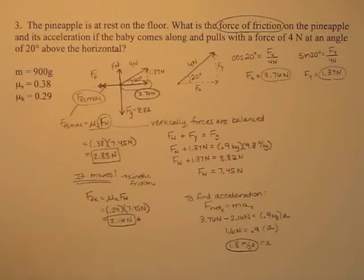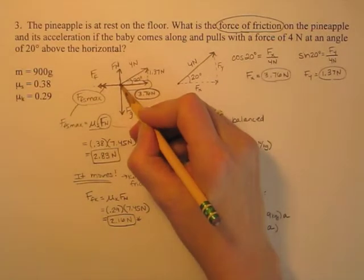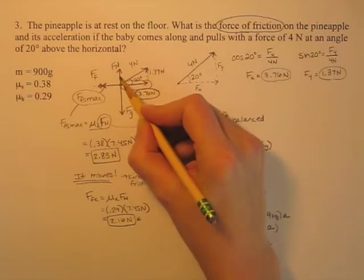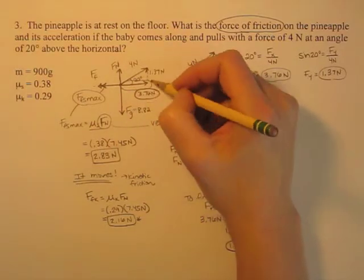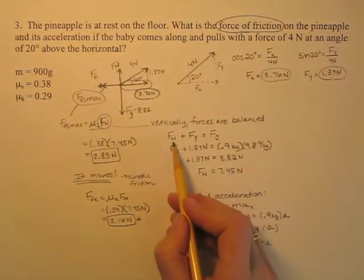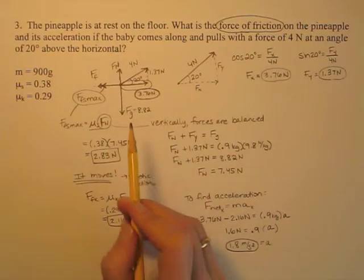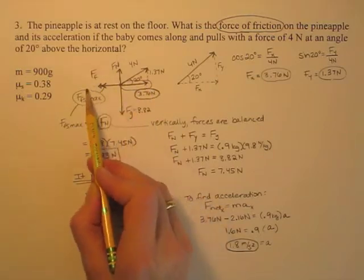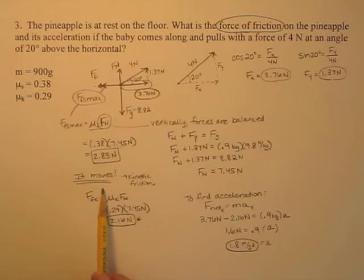In this problem, it's similar to a simpler friction problem, but the key difference is that when you have a force at an angle, that impacts the normal force — the normal force is no longer equal to gravity. You have to combine all the vertical forces to find the normal force. Then you compare the horizontal component to friction, because those oppose each other, to find out if it moves. If it moves, you have kinetic friction, and then you can find the acceleration.